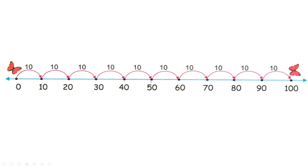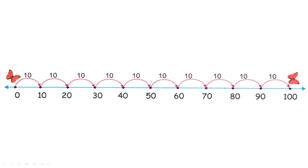Let's do one together. So 10 times two equals 20. We're going to take our index finger and start at zero and take two hops. One hop, two hops. I took two hops of 10 and I got to 20. So 10 times two equals 20.